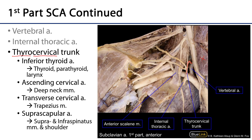The next branch is the ascending cervical artery, which serves the deep neck muscles such as the scalene muscles.